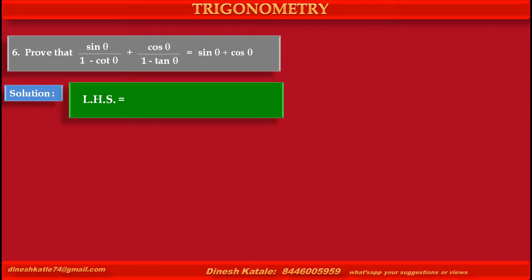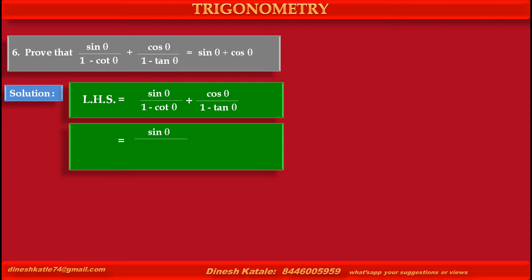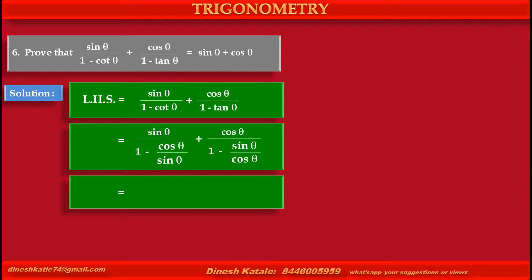Left hand side is equal to sin theta upon 1 minus cot theta plus cos theta upon 1 minus tan theta. In the first term, the numerator is sin theta upon 1 minus cot theta, that is cos theta upon sin theta. In the second term, the numerator is cos theta upon 1 minus tan theta, that is sin theta upon cos theta.